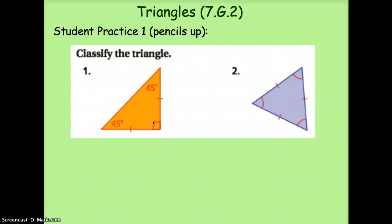So that means this is a right isosceles triangle. Right triangle because it has the right angle. Isosceles because two sides are the same length.